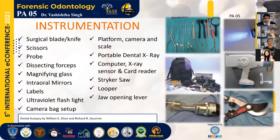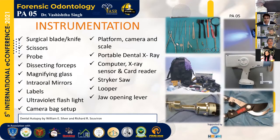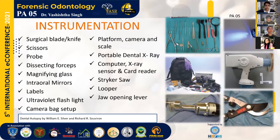Here are some basic instruments and components required in an autopsy kit. First, we have a surgical blade and knife for making an incision. Then we have scissors, probes, dissecting forceps, magnifying glass and intraoral mirrors for proper visualization of the structures. Then we have labels, ultraviolet flashlights to distinguish between the tooth and tooth-colored restoration, a camera bag setup to keep camera accessories, a platform, camera and scale to take pictures at the site. Then portable x-rays for field radiography, computer x-ray sensors and card readers. We also have tools like a striker, which is used for bone cutting, a looper, which is used for separating the jaws, and a jaw-opening lever. Other equipment includes barrier items like gloves, face shield, masks and aprons.